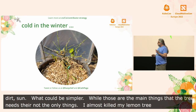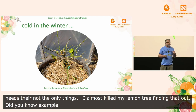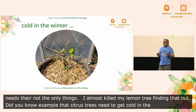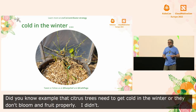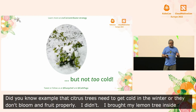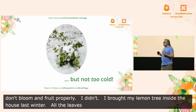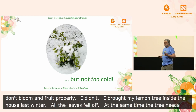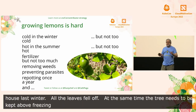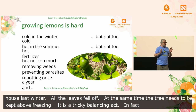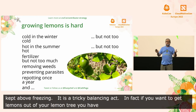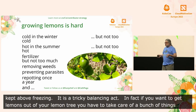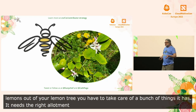Did you know, for example, that citrus trees need to get cold in the winter, or they don't bloom and fruit properly? I didn't. I brought my lemon tree inside the house last winter — all the leaves fell off. At the same time, though, the tree needs to be kept above freezing. It's a tricky balancing act. If you want to get lemons out of your lemon tree, you need to take care of a bunch of other needs: it needs to get hot in the summer but not too hot, it needs the right amount of fertilizer, you need to avoid pests and weeds, and it needs pollination for those flowers.